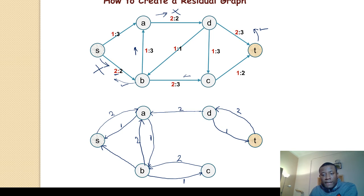Let's consider C to T. We have 1, meaning we can add 1 more in the same direction. We can add 1 backward edge to remove this traffic of 1. So we have a forward edge of 1 and a backward edge of 1 as well.